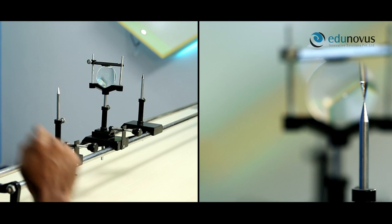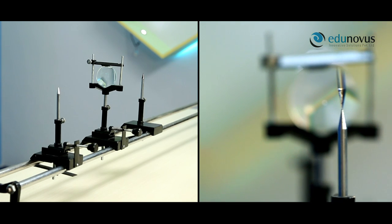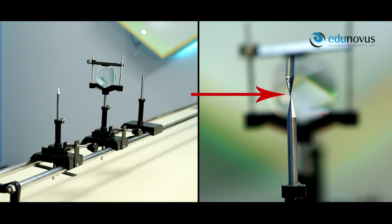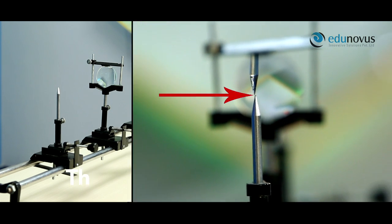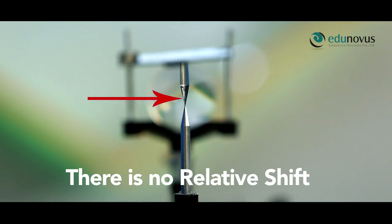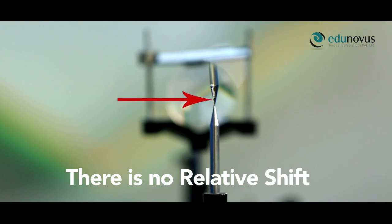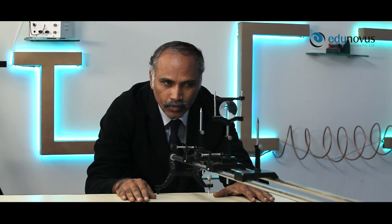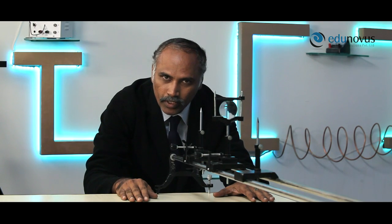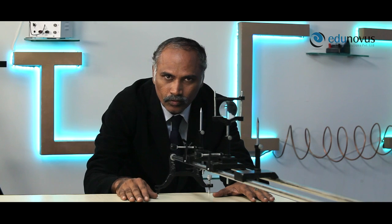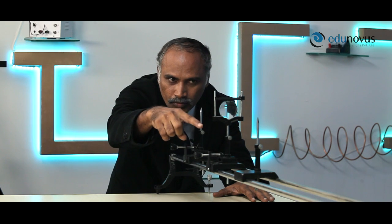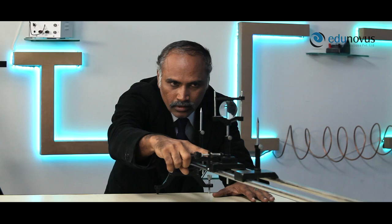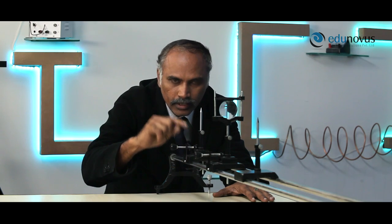When you move your eye to the right and left and there is no relative shift, parallax is removed. After removing the parallax, note down the position of the object needle, the lens, and the image needle.